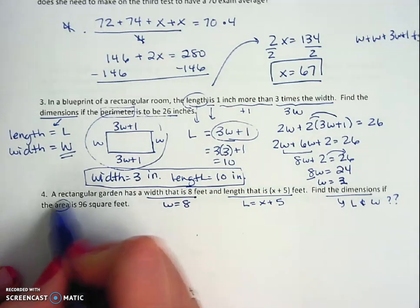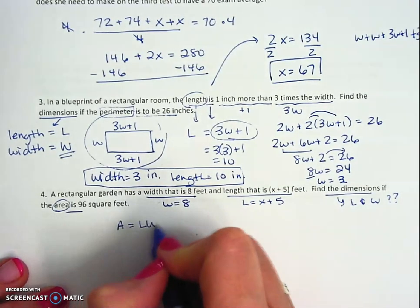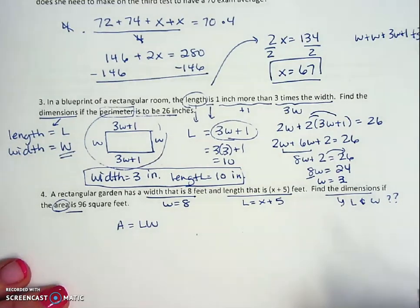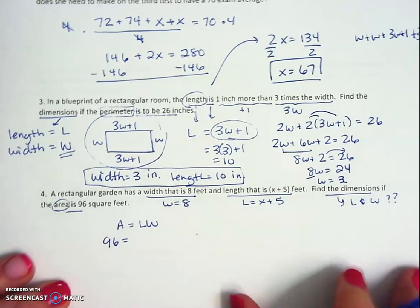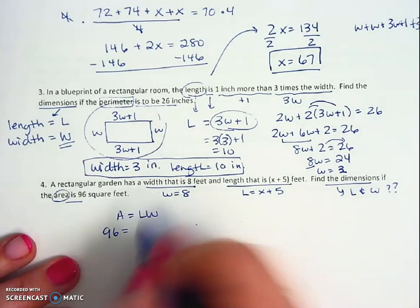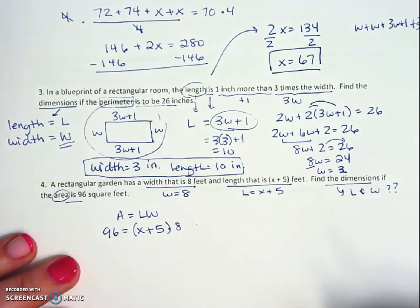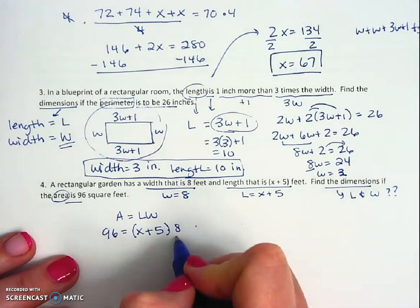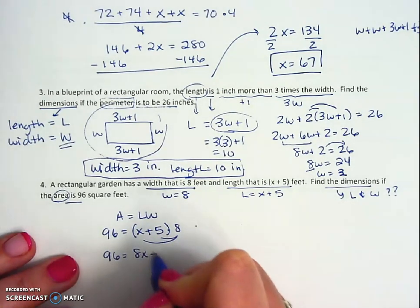If the area is 96, so now we need to remember that area is equal to length times width. So if the area is 96 and my length is x plus 5 times width, which is 8, but I need all of the x plus 5 times the 8, so I'm going to put parentheses around that. So now I have a distributive property here: 96 equals 8x plus 40.